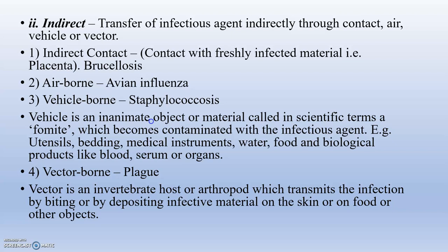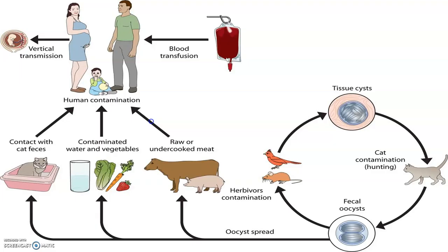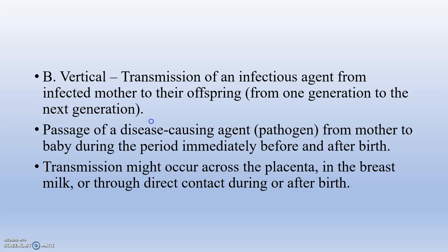A vector is an invertebrate host or arthropod which transmits infection by biting or depositing infective material on the skin. For example, Phlebotomus and Tabanus apply fecal or salivary material on the skin of humans, transmitting protozoans. Vertical transmission — the transmission of an infectious agent from an infected mother to offspring — involves passage from one generation to the next, either through the placenta, breast milk, or direct contact during or after birth. Toxoplasmosis is an example.